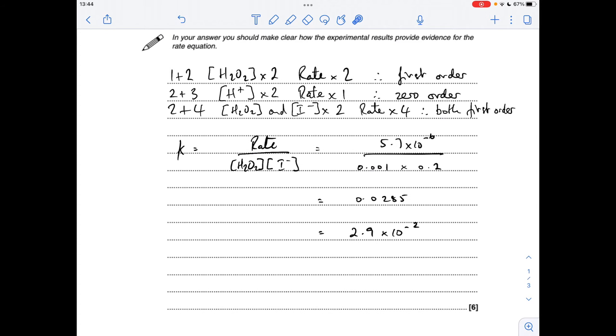So to get the K value, I've rearranged the rate equation. I've used the numbers from row 1. You can use any of the experiments. They're all done at the same temperature. So we'll calculate the value of that, and to two significant figures and standard form, we get that.